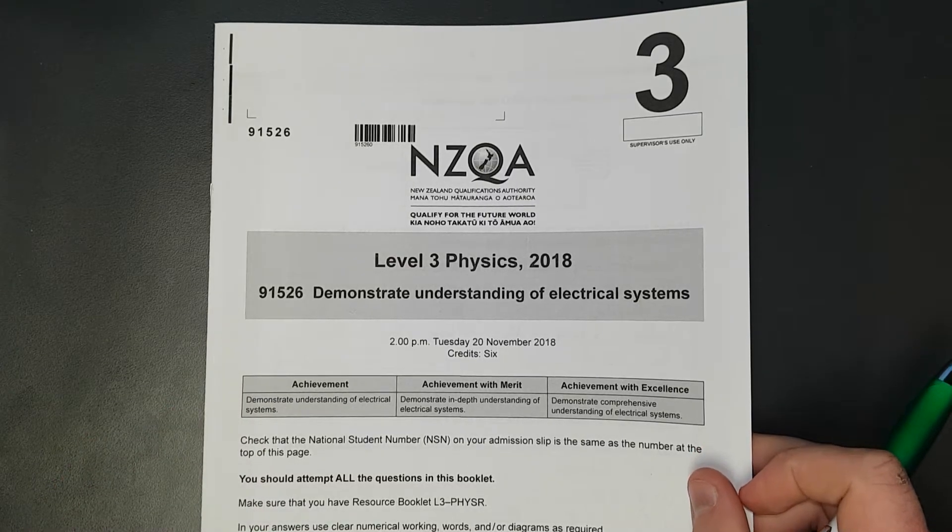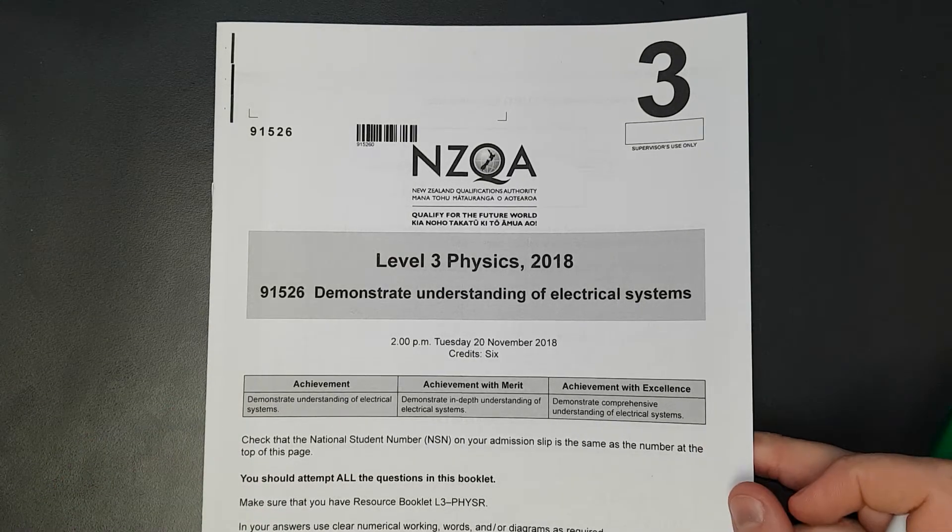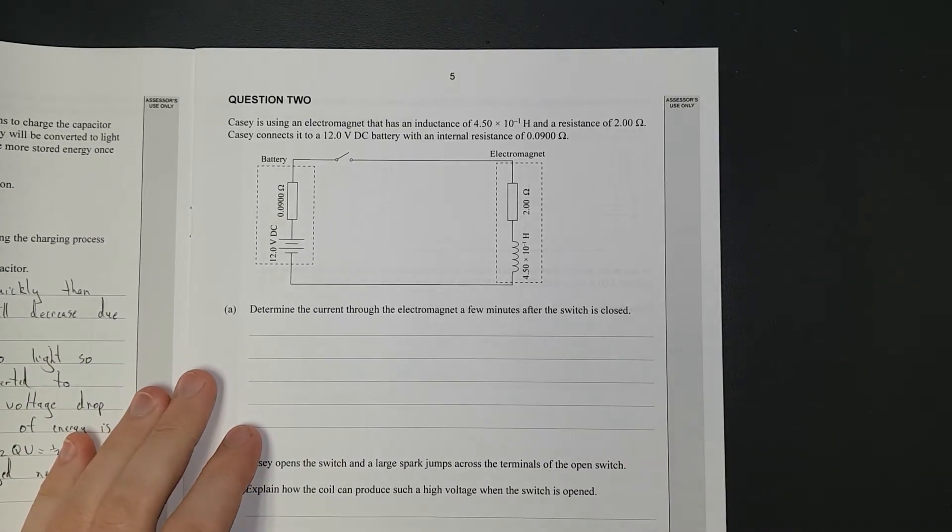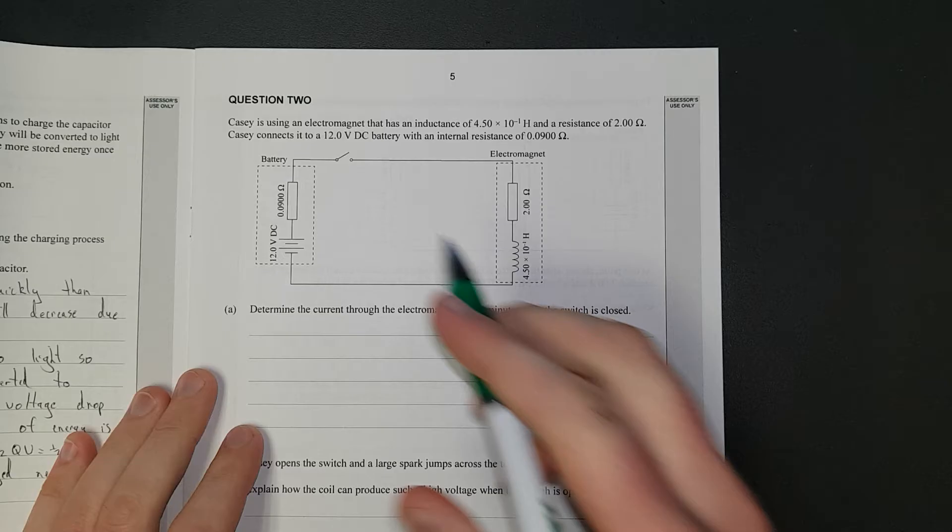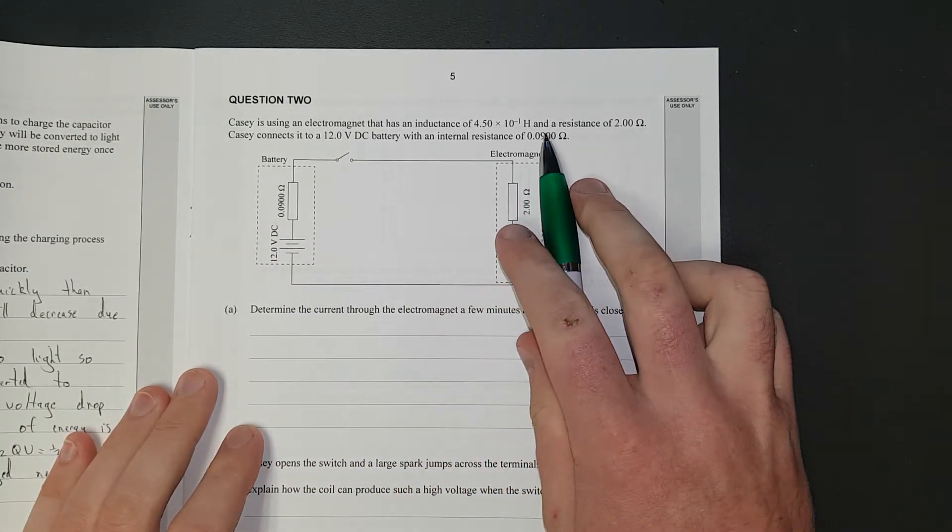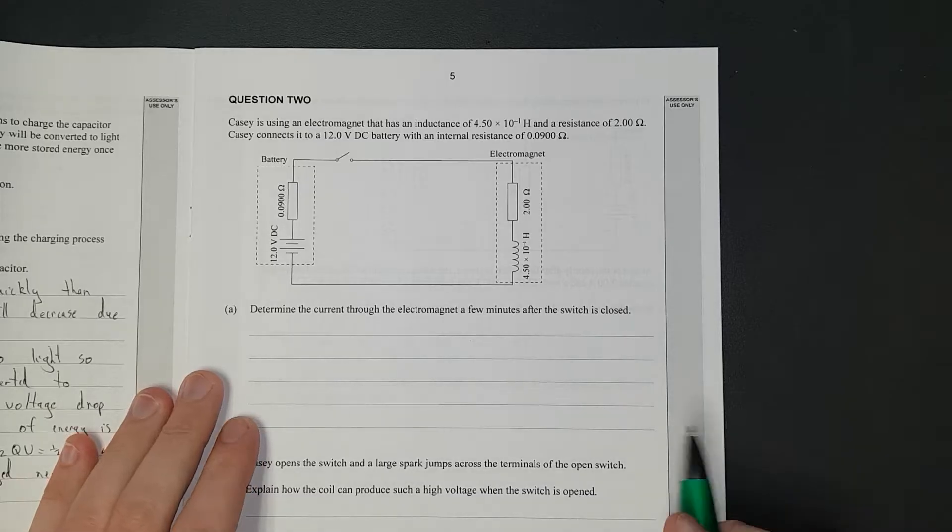For this video I'll be working through question 2 of the level 3 2018 electricity exam. Question 2: Casey is using an electromagnet that has an inductance of 4.5 times 10 to the negative 1 Henrys, resistance of 2 ohms, connects it to a 12 volt DC battery with an internal resistance of 0.9 ohms. It's pretty small.